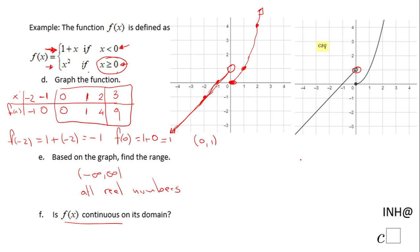In interval notation, the range is negative infinity to positive infinity. The last question asks whether the function is continuous. If you notice, this function is not continuous because we have a hole at (0, 1) and a jump there. So this function is not continuous. That's it — if you enjoyed this video, don't forget to click the like button and come back to C-Squared for more help!